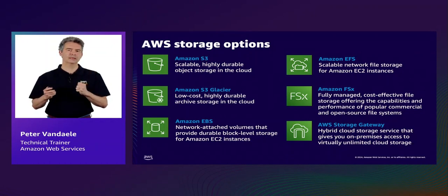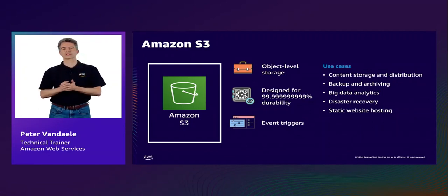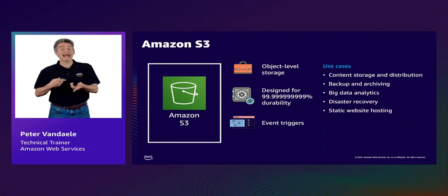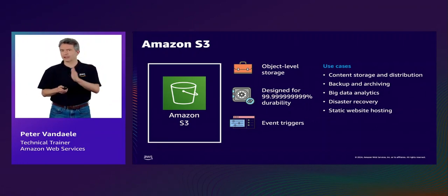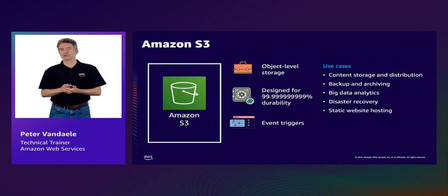S3 is an object-level storage. It is a managed service, which means S3 manages the storage layer for you. There are two key terminologies: objects and buckets. Buckets are containers that store your objects. Objects consist of the data in the file, a key that uniquely identifies a file, and metadata like timestamps and storage classes. S3 is designed for 11 nines durability — a measure of how likely you are to lose a file. For example, if you store 10 million objects with Amazon S3, you can on average expect to incur a loss of a single object once every 10,000 years.